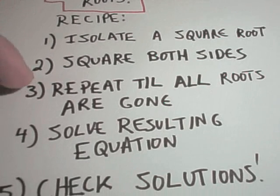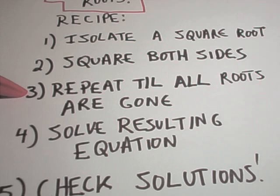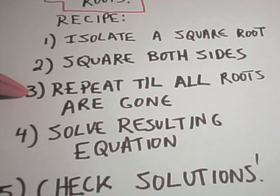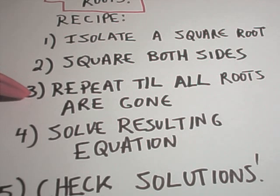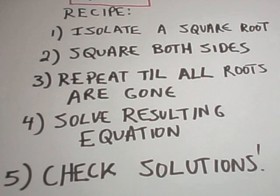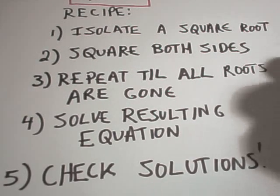Assuming there's maybe more than one root, you're going to keep isolating whatever roots are left and squaring everything until all the roots are gone. You'll solve that resulting equation, then check your solutions. Let's illustrate this with a couple examples.